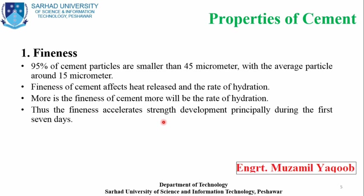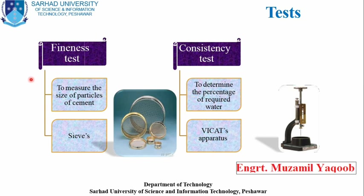Let's discuss the first one, which is fineness. Fineness means 95% of cement particles are smaller than 45 micrometers, with an average particle size of around 15 micrometers. Fineness affects the rate of hydration — the more the fineness of cement, the greater the rate of hydration. Fineness accelerates strength development during the first seven days.